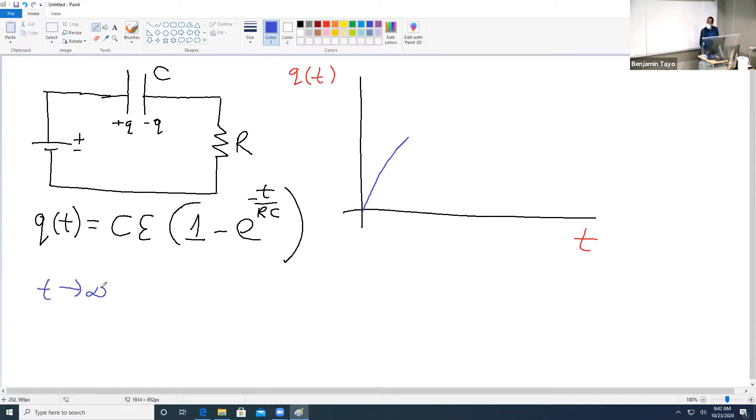When t goes to infinity, what does that give me? You're taking an exponent of negative infinity which becomes zero. So do you see that eventually this is just going to flatten at this value here? And so it means that the maximum charge that you can store in the capacitor is given by this quantity there.